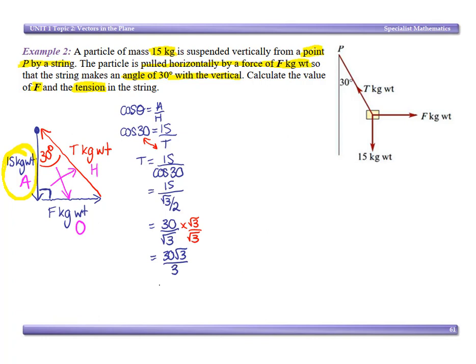So that gives us 30 root 3 over 3, which is 10 root 3. So that's our tension. Now you could now use Pythagoras because I know that this is 10 root 3.